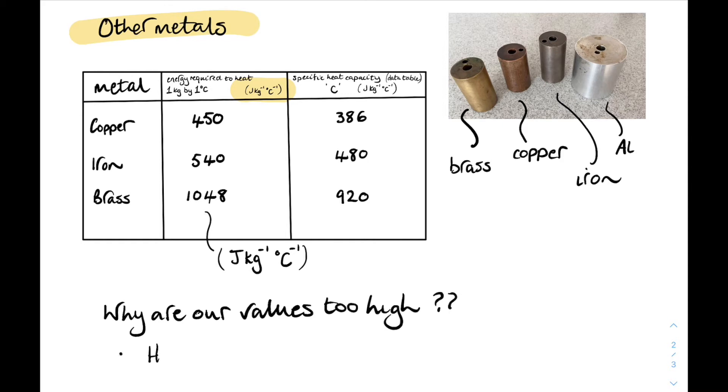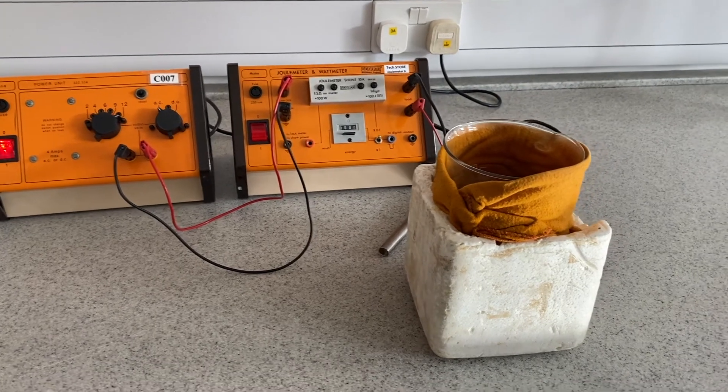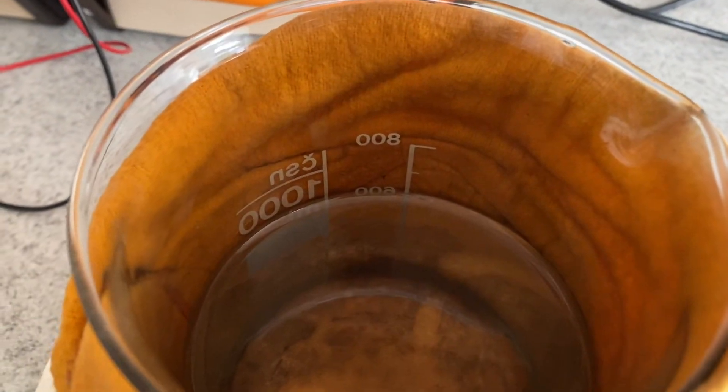Again, it's down to the fact that these blocks weren't insulated. And heat is always lost to the surroundings. The only way to reduce that is to insulate them. Now it's not only metals we're going to look at. You might also be asked about the specific heat capacity of a liquid. For example, water.